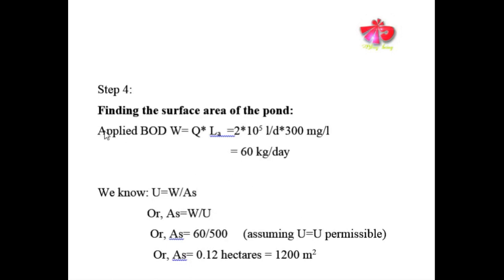In Step 4, we find the surface area of the pond. First we calculate applied BOD: W = Q × La = 2×10⁵ liters per day × 300 mg per liter = 60 kg per day. The second parameter needed is the organic loading.